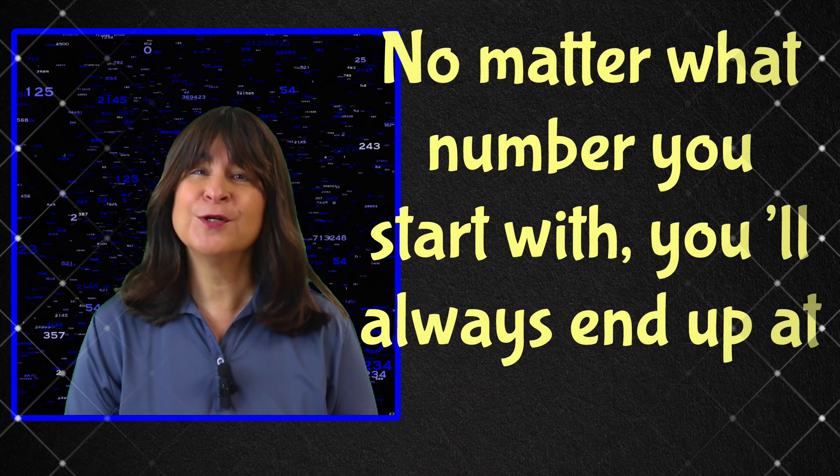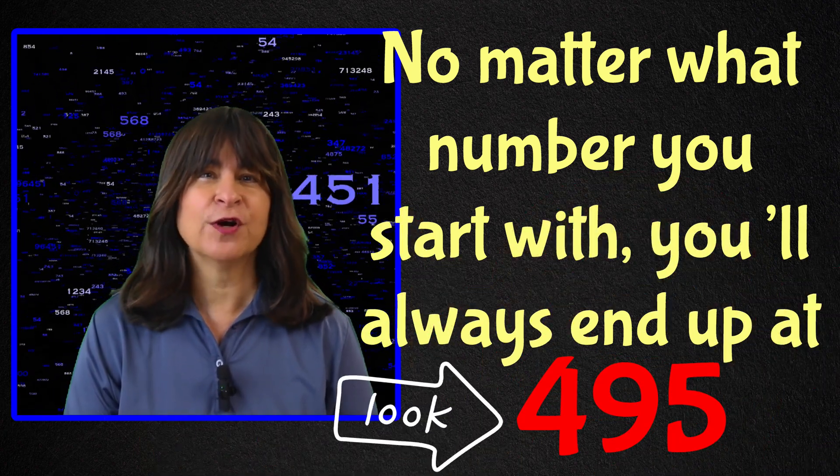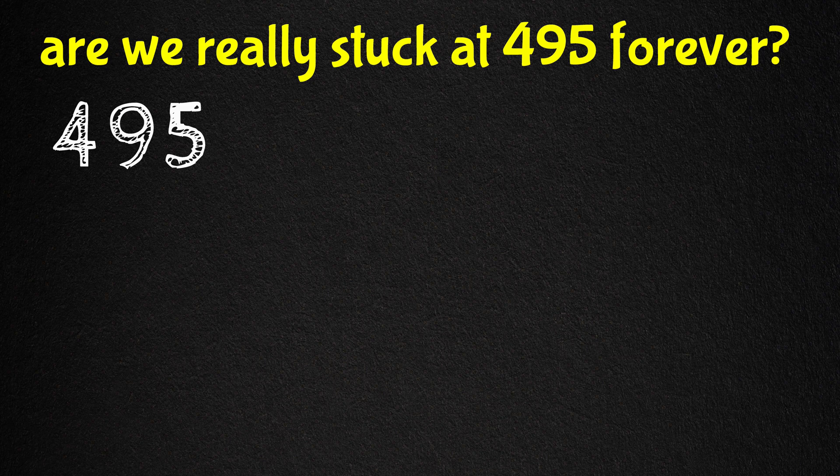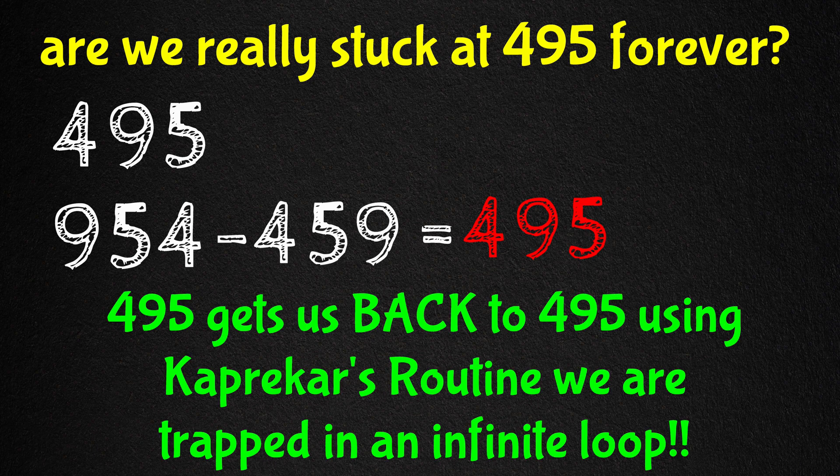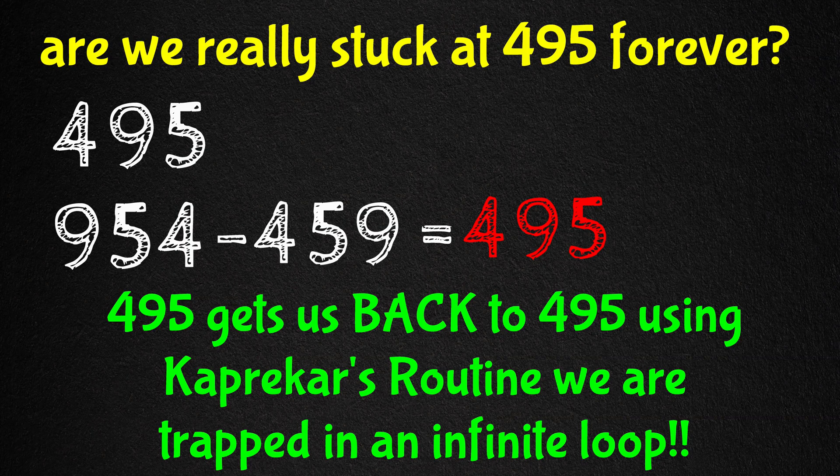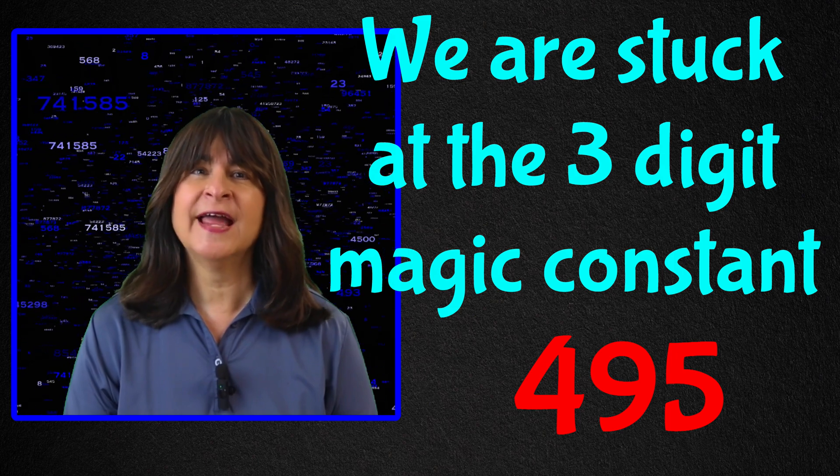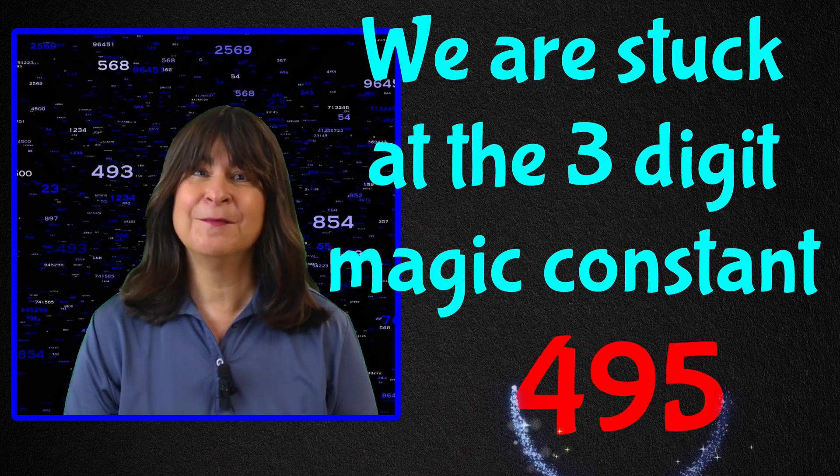No matter what number you start with, you'll always end up at 495. And once you hit 495, you stay there forever. Let's see if that's true. 495. Arrange in descending order. We get 954. Ascending order is 459. Subtract. And we get 495. And now we're stuck. 495 gets us back to 495. We are stuck at the three-digit magic constant. From now on, any rearrangement and subtraction will always bring you back to 495. Amazing.